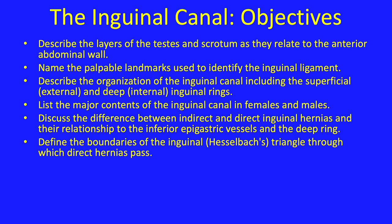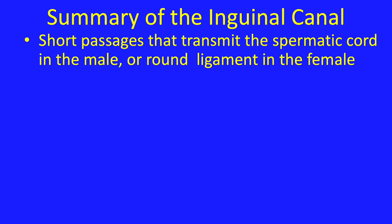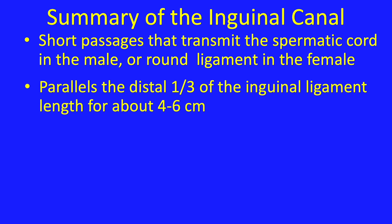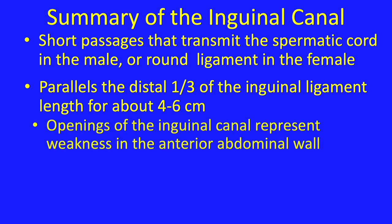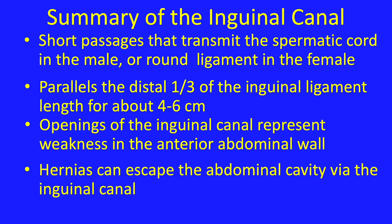Before getting into the substance of the lecture, let me introduce the concept of the inguinal canal. The inguinal canals are short passages in the anterior abdominal wall that transmit the spermatic cord in the male or the round ligament in the female. They are located parallel to the distal one-third of the inguinal ligament's length for about four to six centimeters. The openings of the inguinal canal represent weaknesses in the anterior abdominal wall, and because of these weaknesses, hernias can escape the abdominal cavity via the inguinal canal.